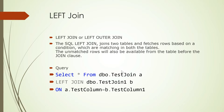Apart from the matched rows, the unmatched rows from the table before the join — meaning the left table — will also be available. So all the non-matched rows from the left table will also be included. That's the difference between inner join and left join: inner join will have only the matched rows, while left join will have the matched rows as well as the non-matched rows from your left table.